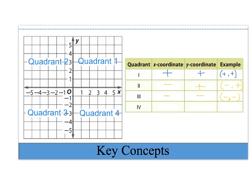In quadrant 4, on the x-axis we have positive numbers, so our x-coordinates will be positive. The y-coordinates for quadrant 4 are negative. So our ordered pairs in quadrant 4 would be positive, negative.